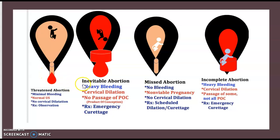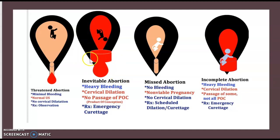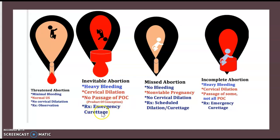The second one is inevitable abortion. Here there is heavy bleeding with cervical dilatation, but there is no passage of POC — product of conception. Management here is emergency curettage.